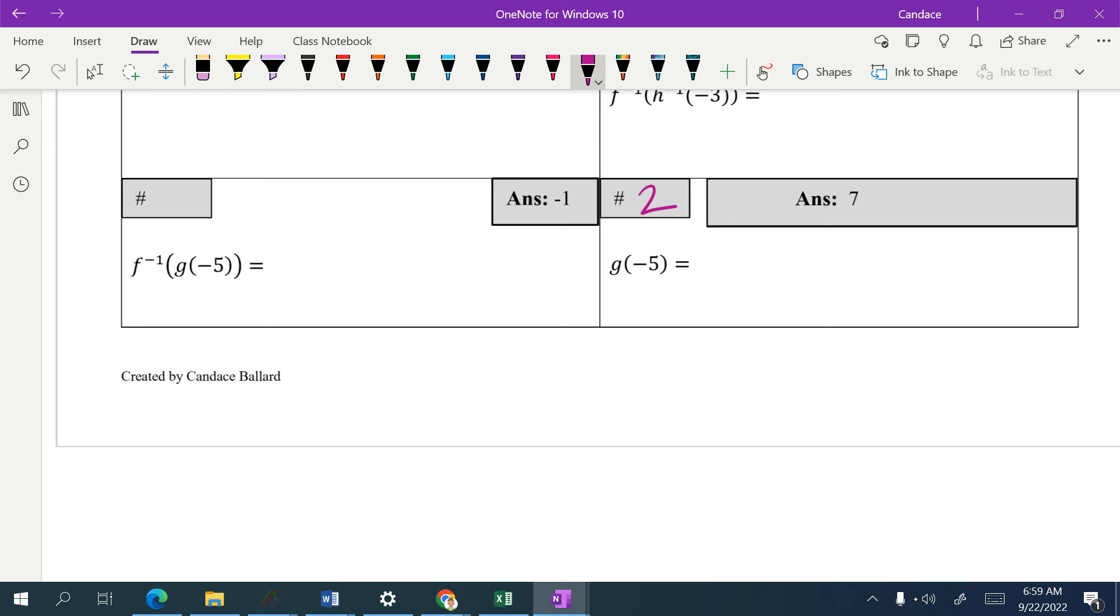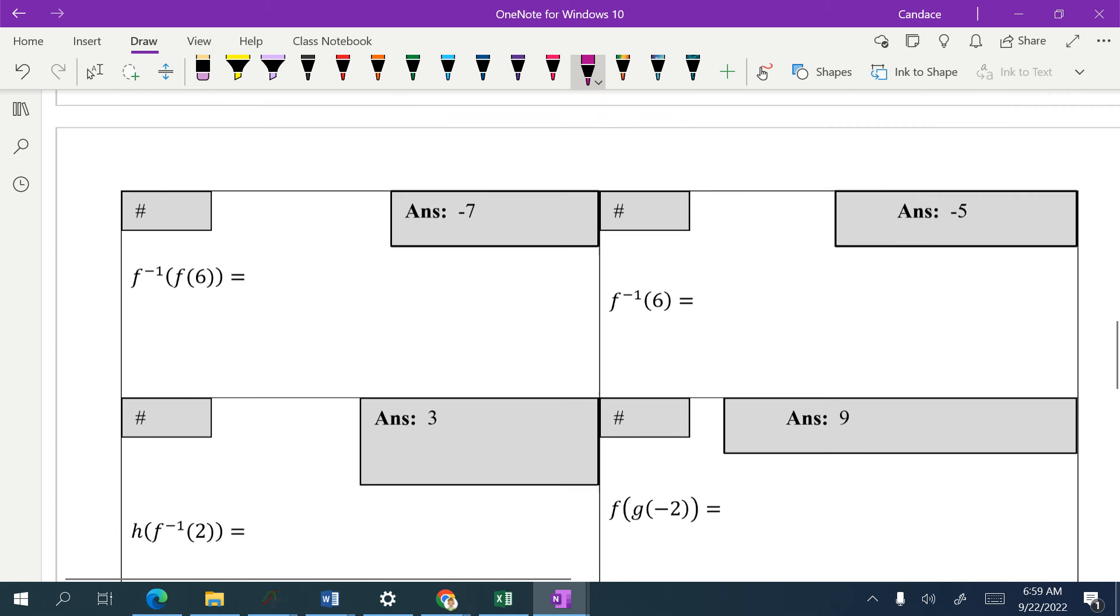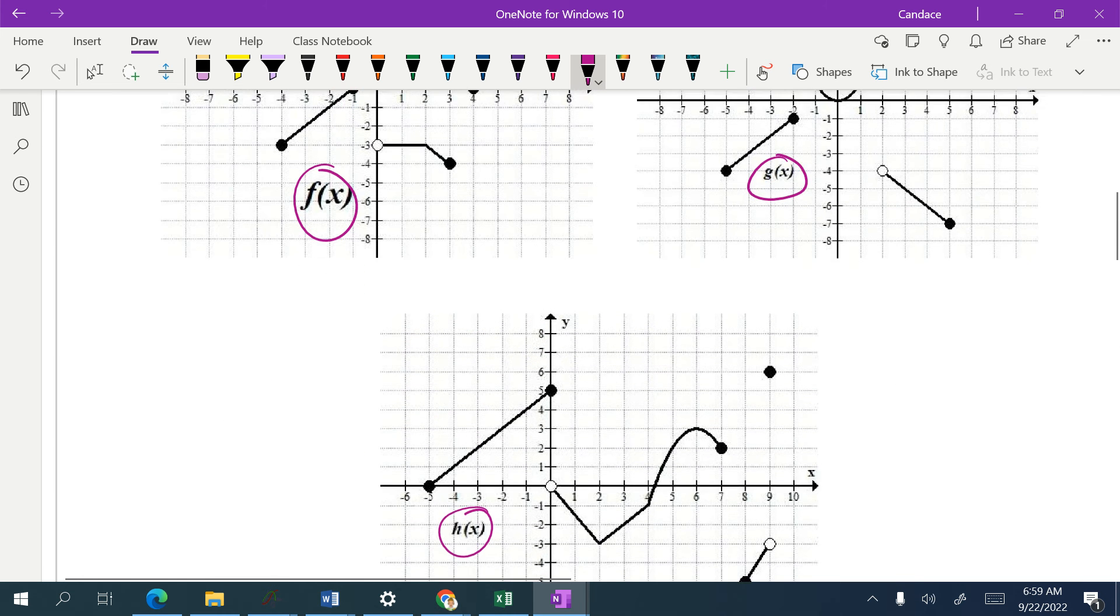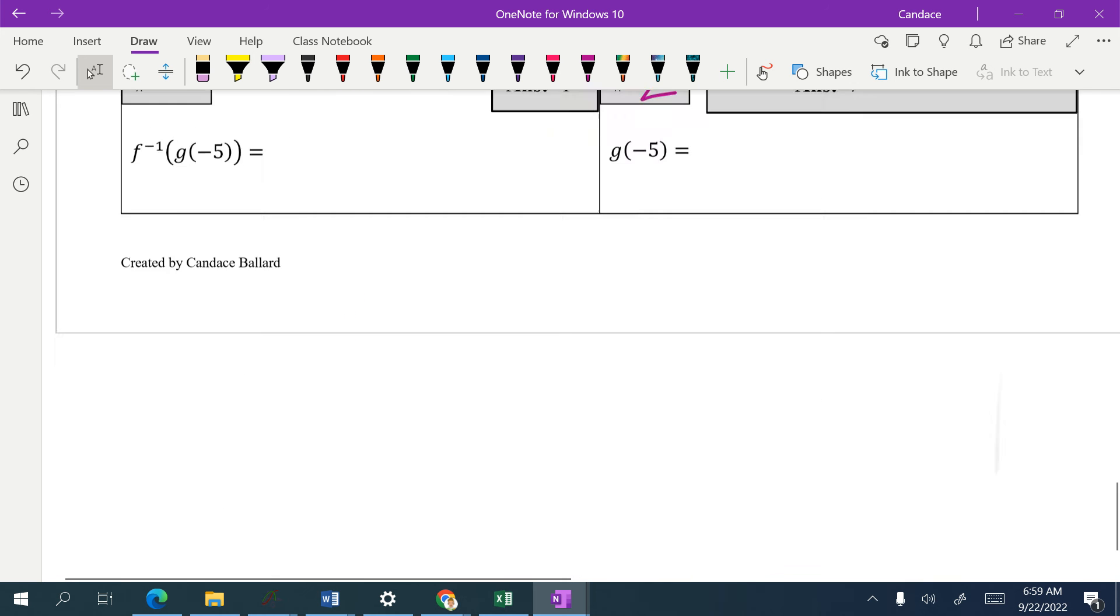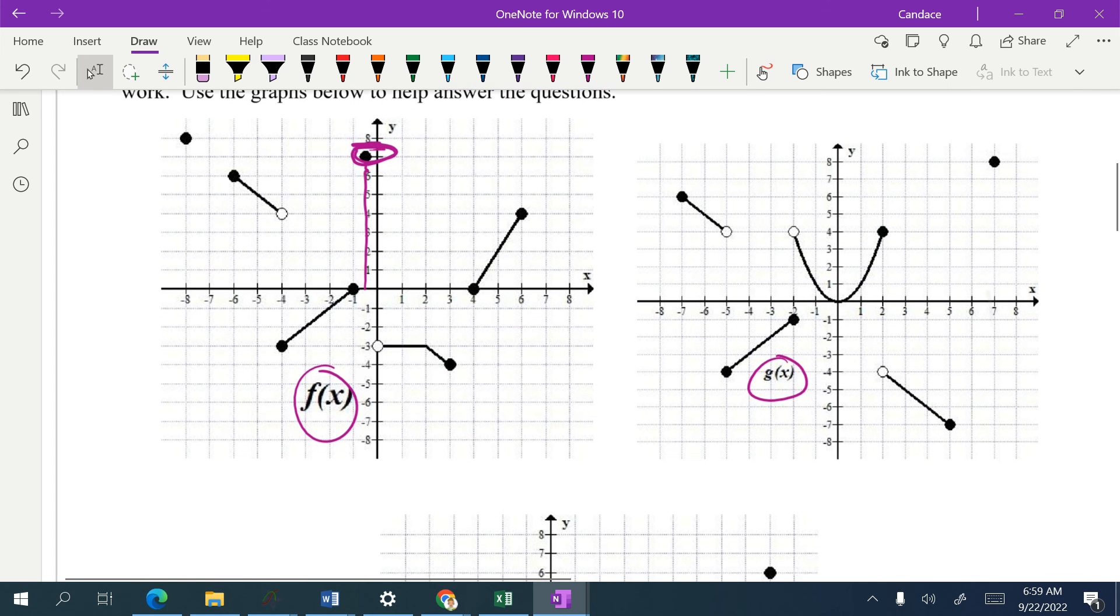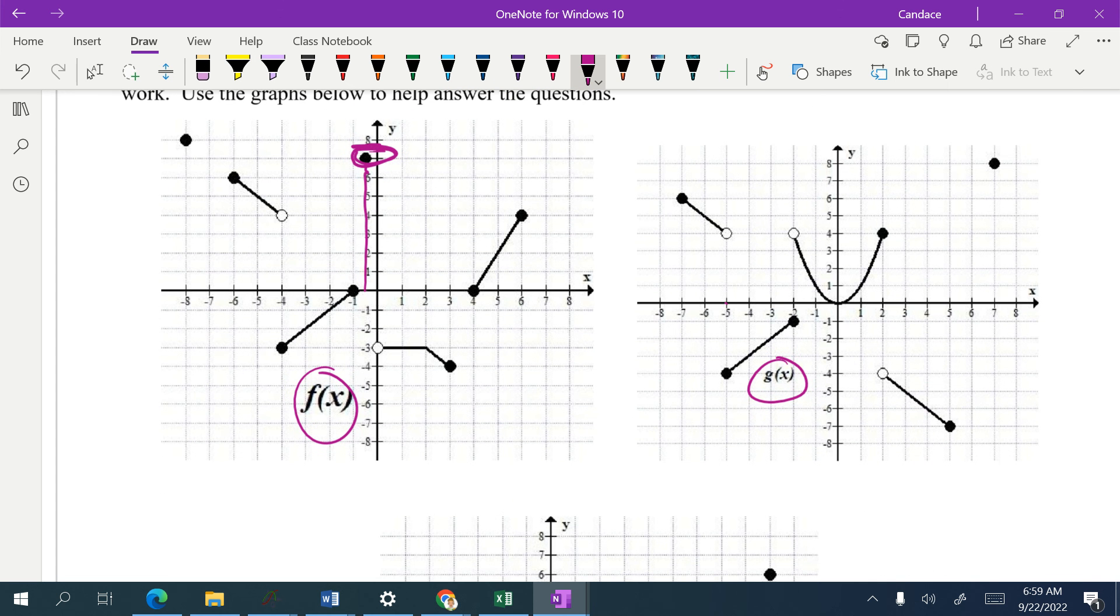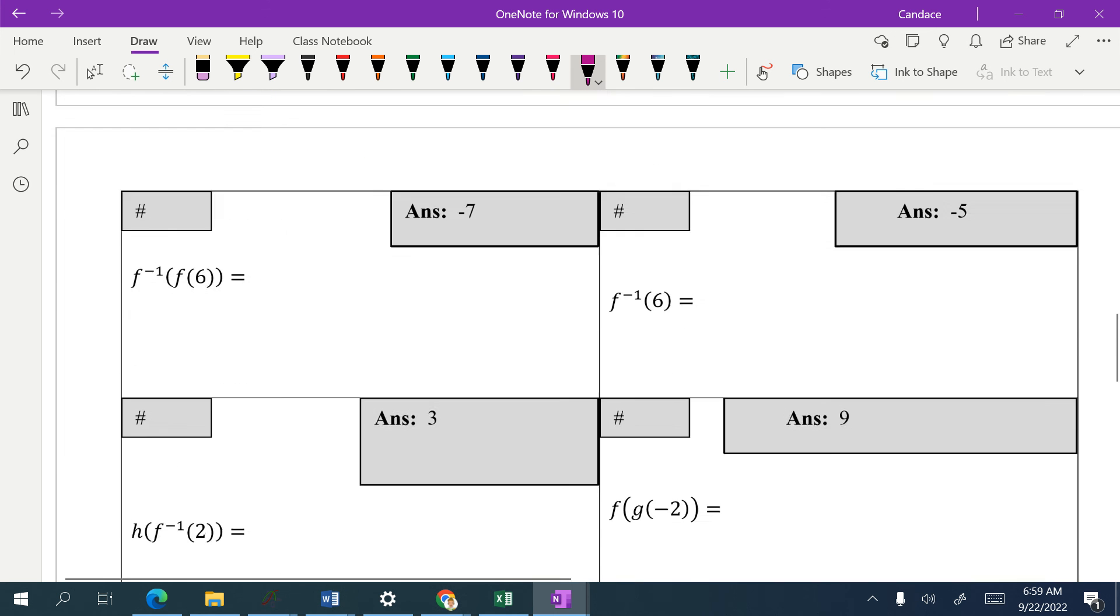Now I'm going to find g of negative five. So I'm going to go to my g graph. There's my g graph and I'm going to find, was it five or negative five? Negative five. So g of negative five. And I'm going to look for the solid dot or the solid line. And it looks like it is negative four.